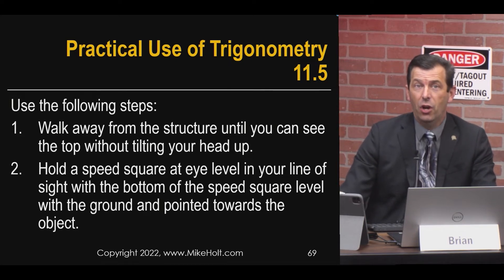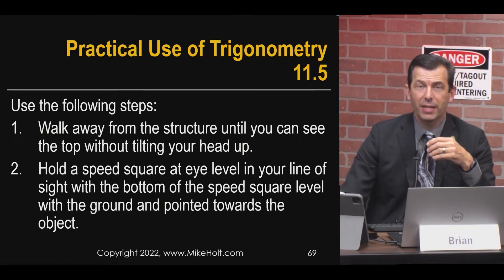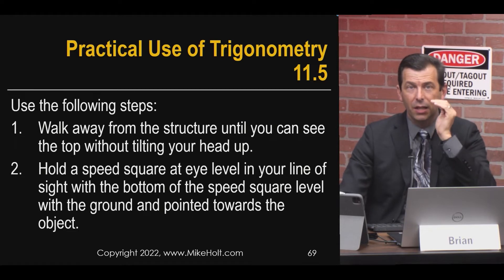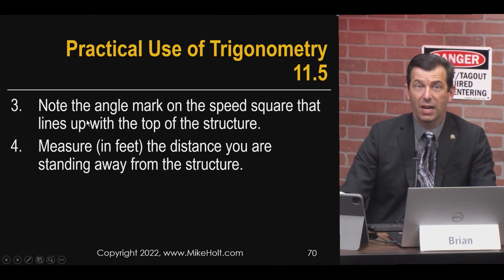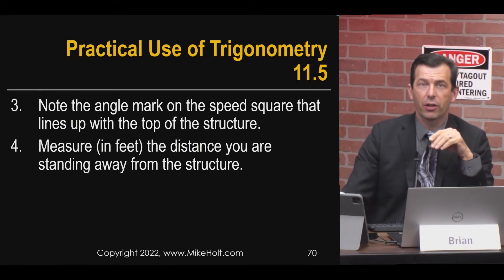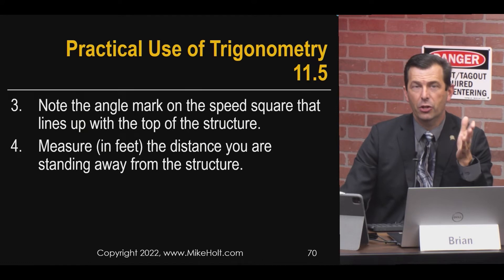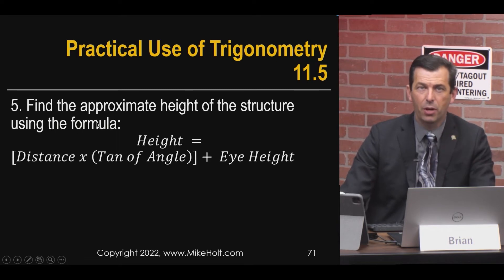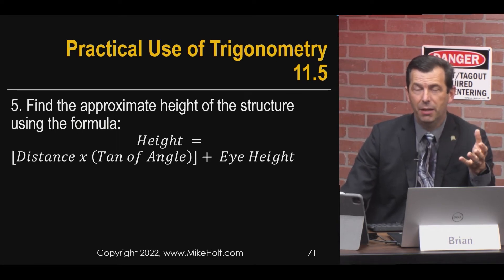We're gonna start out with the following steps: find a light pole, walk away until you can see the top of it without tilting your head up. Then take a speed square, hold it up at eye level, and line your sight up with the bottom of the pole and point it toward whatever you're trying to measure. Look across it up at the top of the structure, see what the angle is, and write that down. Then measure the distance in feet to the object you sighted.